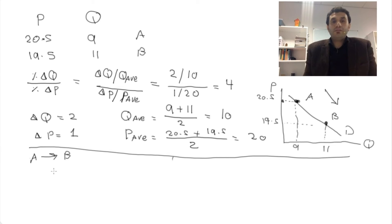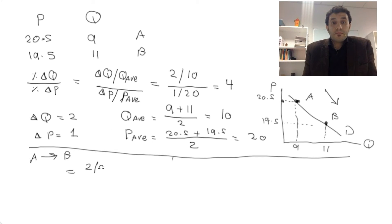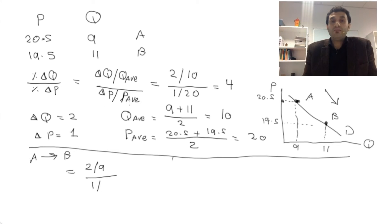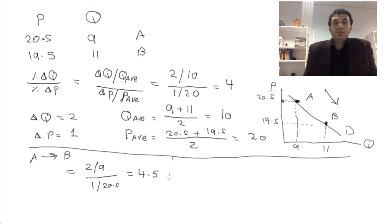Moving from A to B: the change in quantity is still 2, divided by the original quantity of 9. The change in price is still 1, divided by the original price of 20.5. This gives us an elasticity of 4.5.